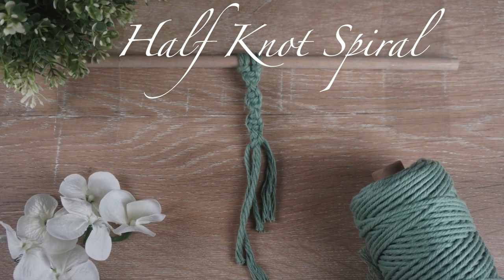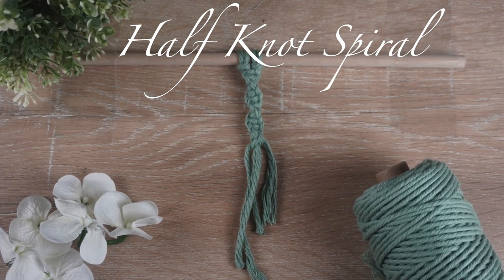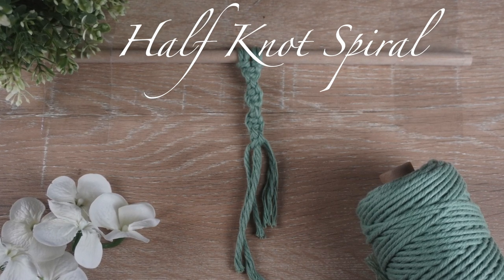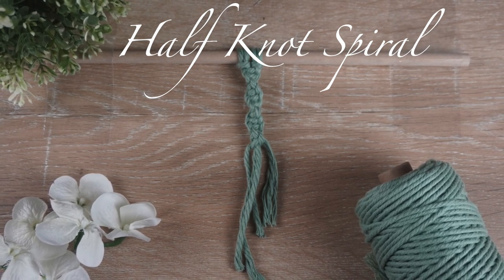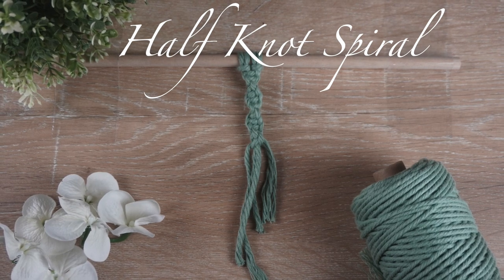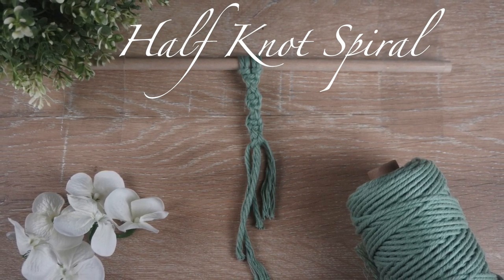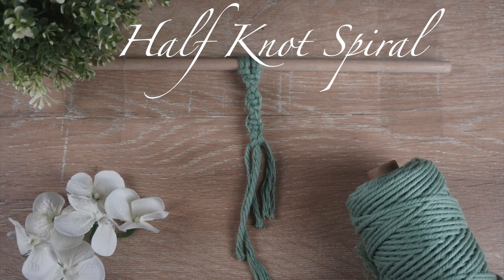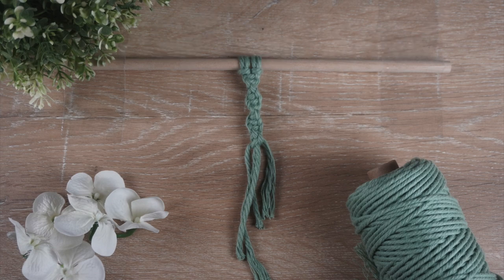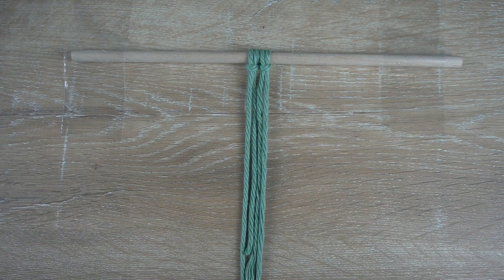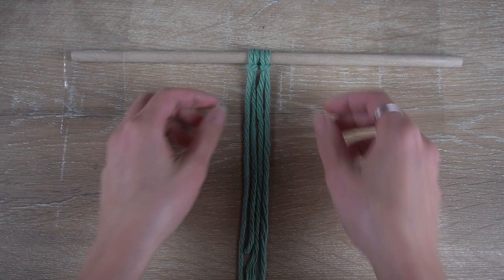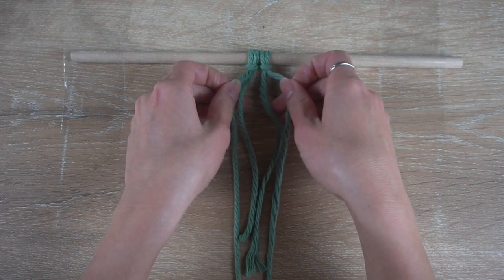Hi everyone, welcome back to another knot series tutorial. We will be going over how to make a half knot spiral. As the name indicates, we will be making a series of half knots to form a spiral-like chain. And with that, let's begin. You will need four vertical strands to make a half knot spiral.